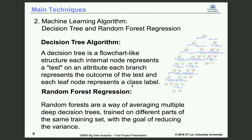The decision tree is a flowchart-like structure where each internal node represents a test on an attribute, each branch represents the outcome of the test, and each leaf node represents a label. Random forests are a way of averaging multiple deep decision trees, trained on different parts of the same training set, with the goal of reducing the variance.